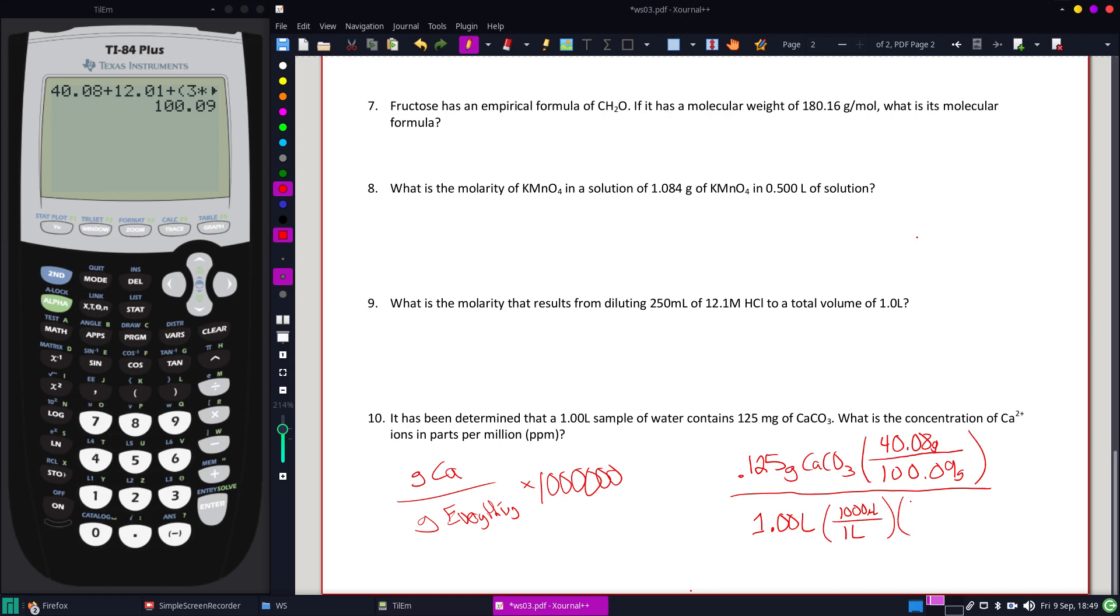Normally on something like this, we'd want to know exactly what temperature the 125 milligrams is measured at. Because the density of water will change with temperature. But for the sake of this one, I'm just going to assume we're using relatively standard water that has a density of one gram per milliliter, which is where it is when the water is around four degrees Celsius.